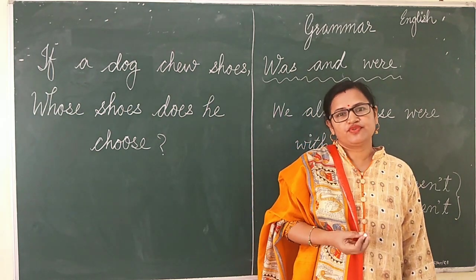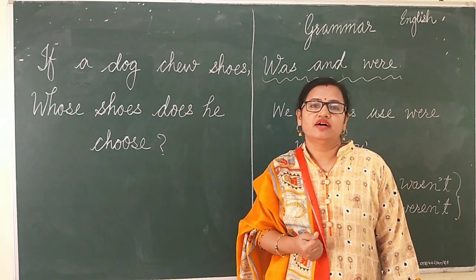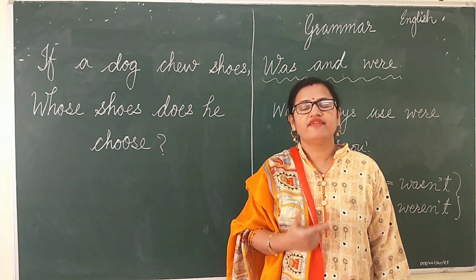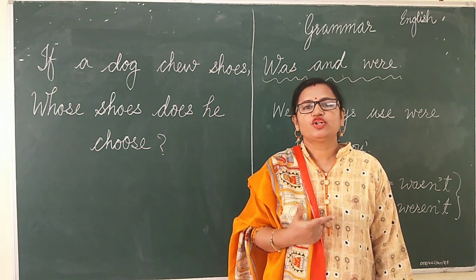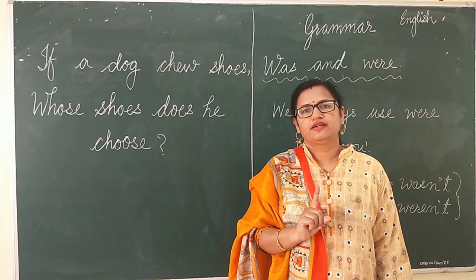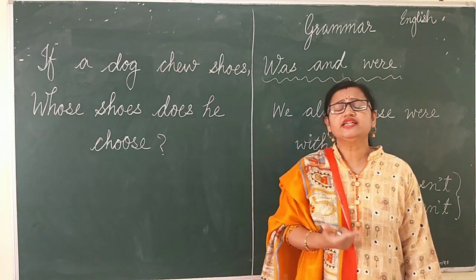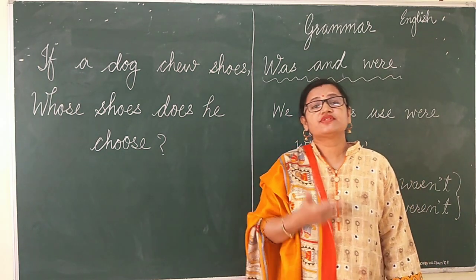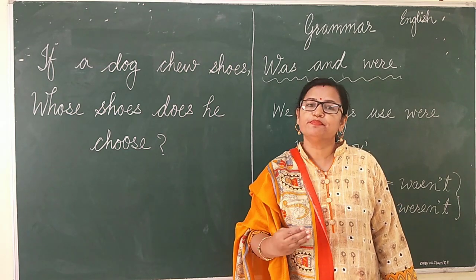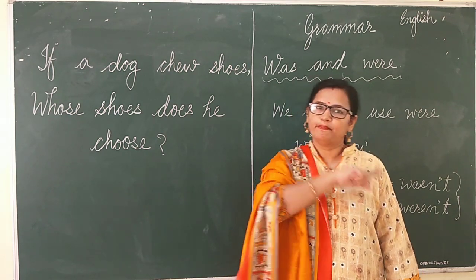So when we use 'was' and when we use 'were'. We use 'was' when we are talking about a single person in the past. And we use 'were' when we talk about more than one person, but in the past.